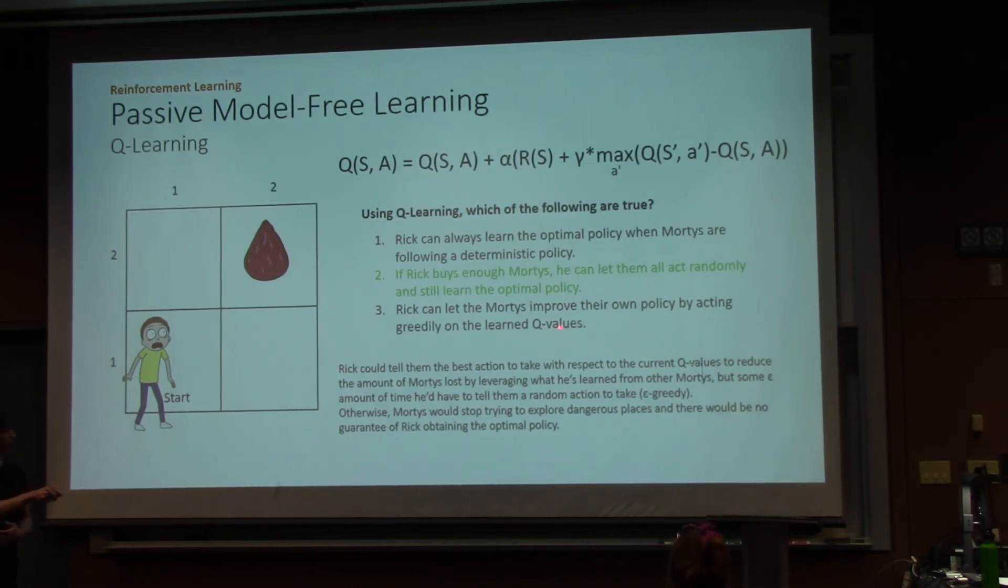In the third one, where it says, well, Rick can let the Mortys improve their own policy by acting greedily on the learned Q-values. This is almost true. The only stipulation to it is that, instead of letting them act greedily, he would have to tell them the greedy action that they could take most of the time. But some of the time, he would still need them to jump off a cliff even if he's already seen Mortys jump off the cliff. Because maybe the seeds are only over that cliff. So you have to continue exploring.